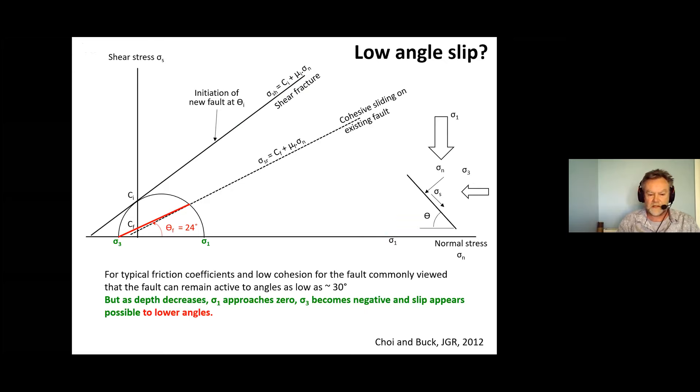But we can get around that if we consider what happens as you get closer and closer to the surface. Is this 30 degree number always there? And the answer is no. As you go closer to the surface sigma one is going to become less and less, that's equivalent to the overburden pressure, and to get close to the initiation of a new fault we may have sigma three becoming negative. In that case we start to find that this angle can become less than 30 degrees, in this case 24 degrees. So as you get close to the surface we expect to get slip on low angle faults.